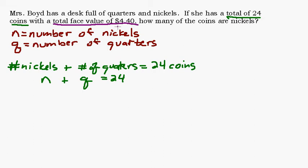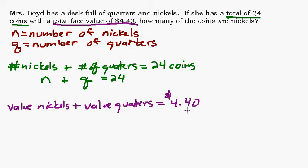Let's go to the face value. The total face value is $4.40. So we know the value of the nickels plus the value of the quarters equals $4.40. What is the value of the nickels? We know we have n nickels, but how much are they worth? They are worth 5 cents times however many nickels I have. How much are the quarters worth? They're worth 25 cents times however many quarters I have. And that's going to add up to be $4.40.